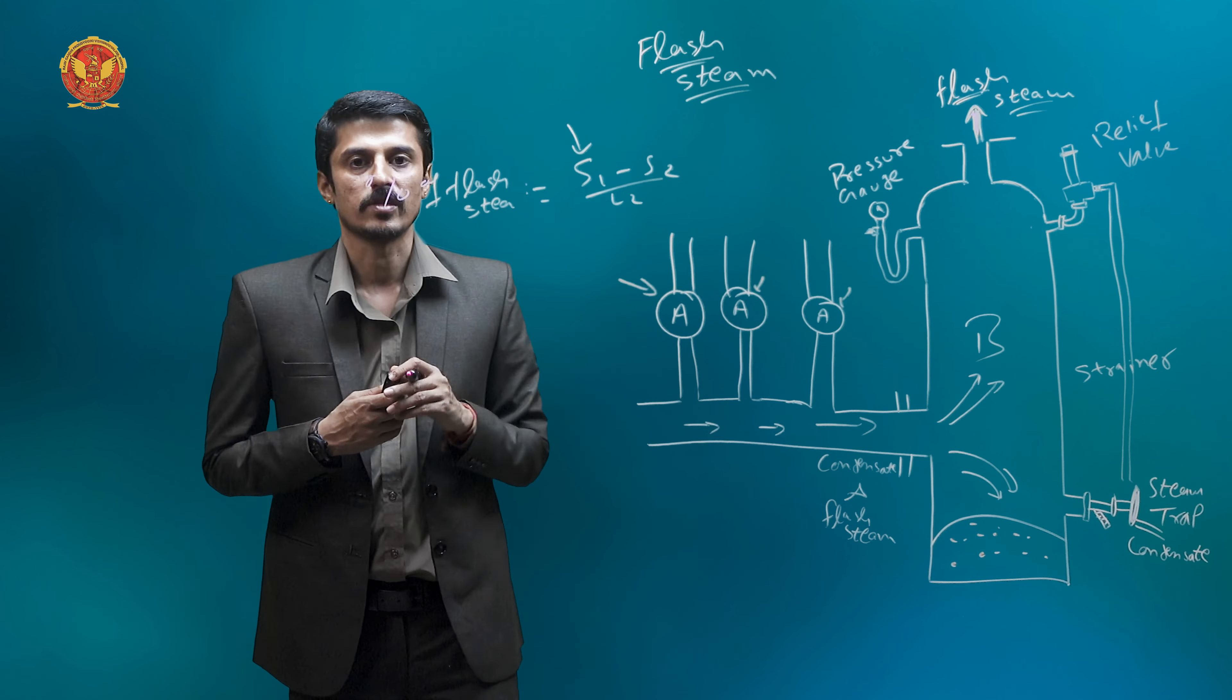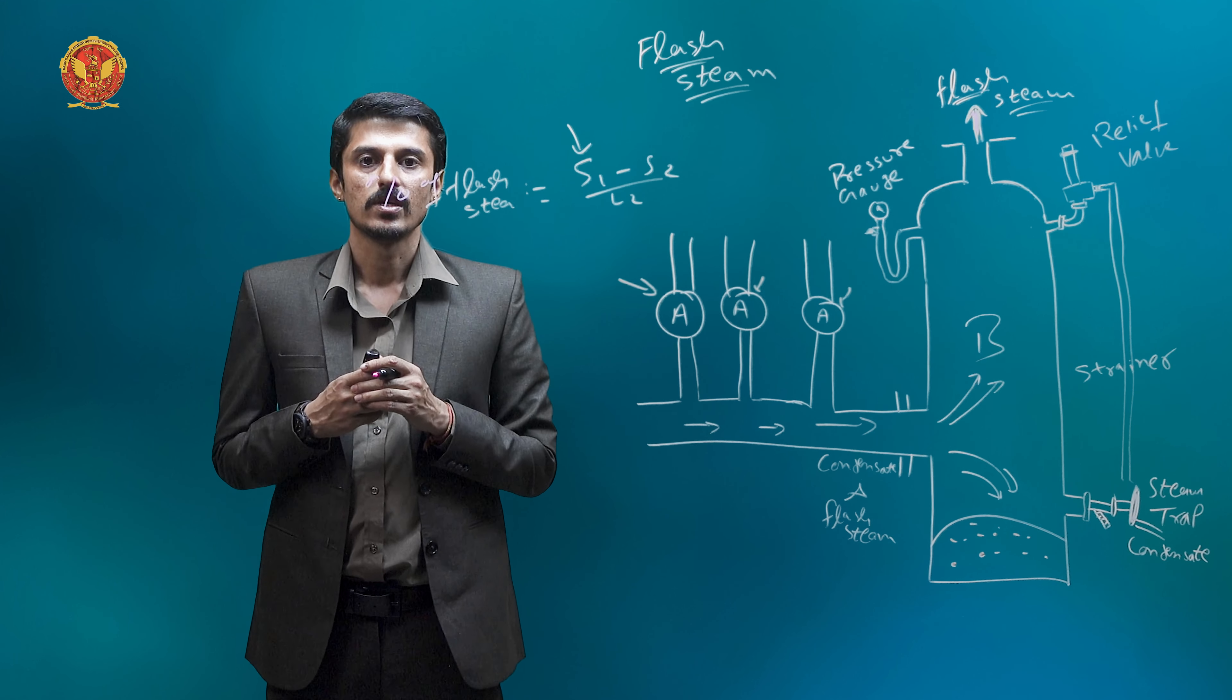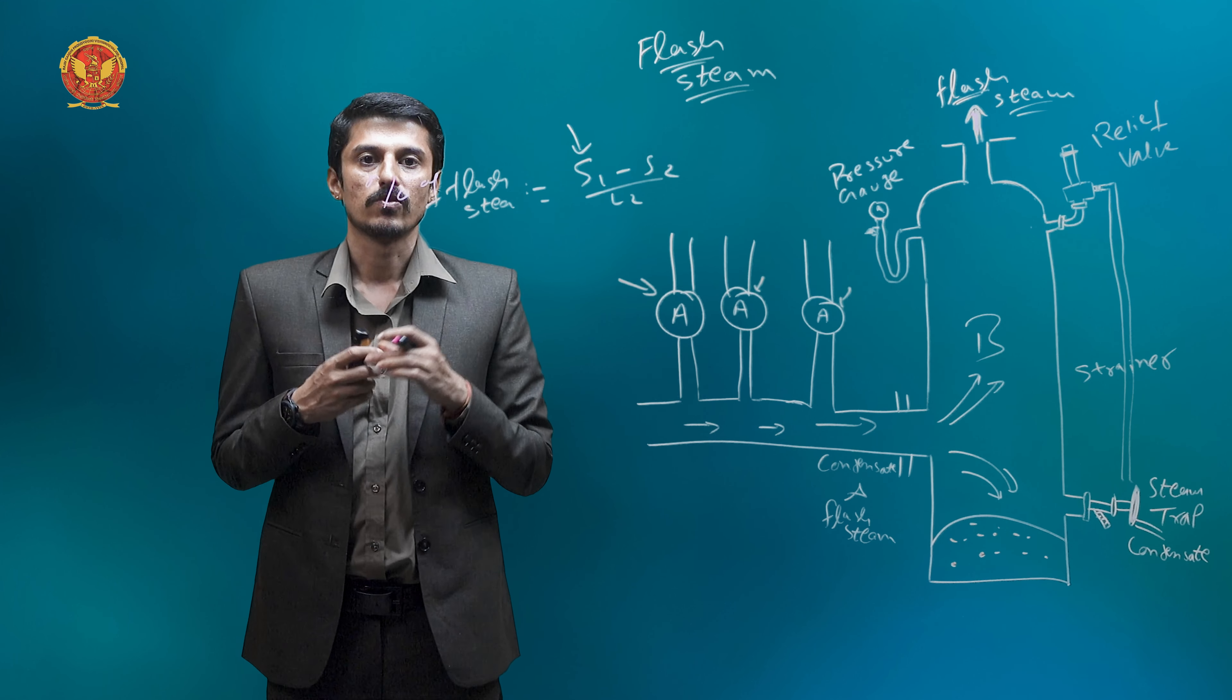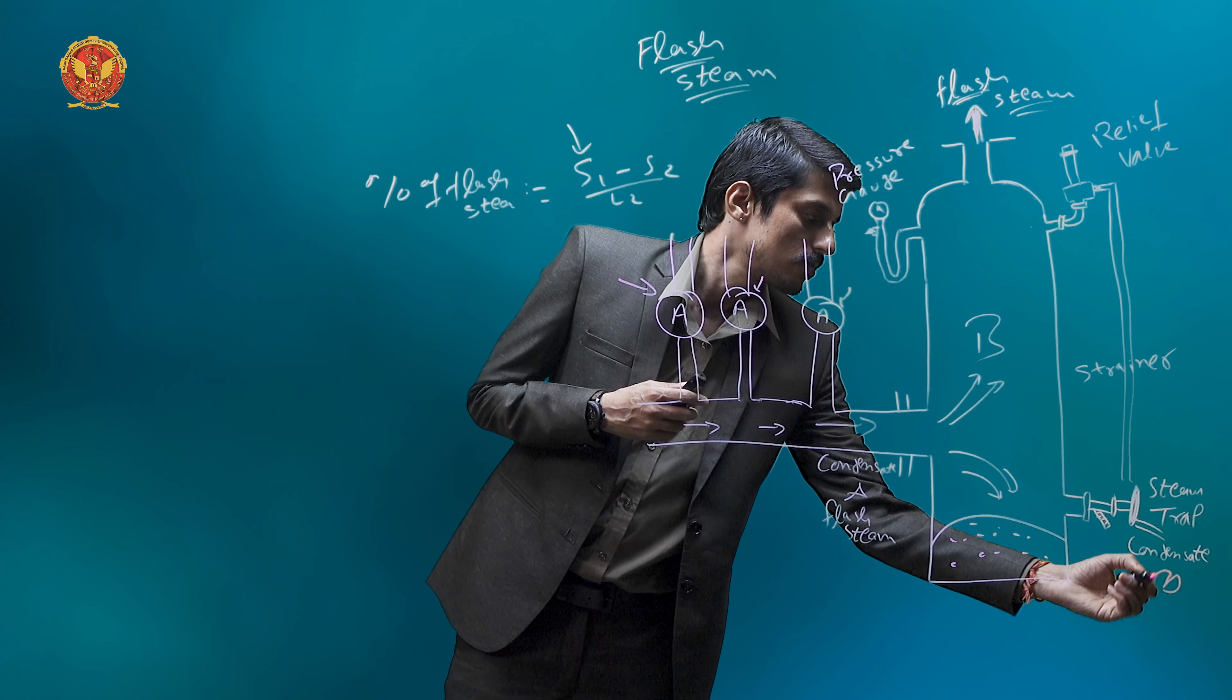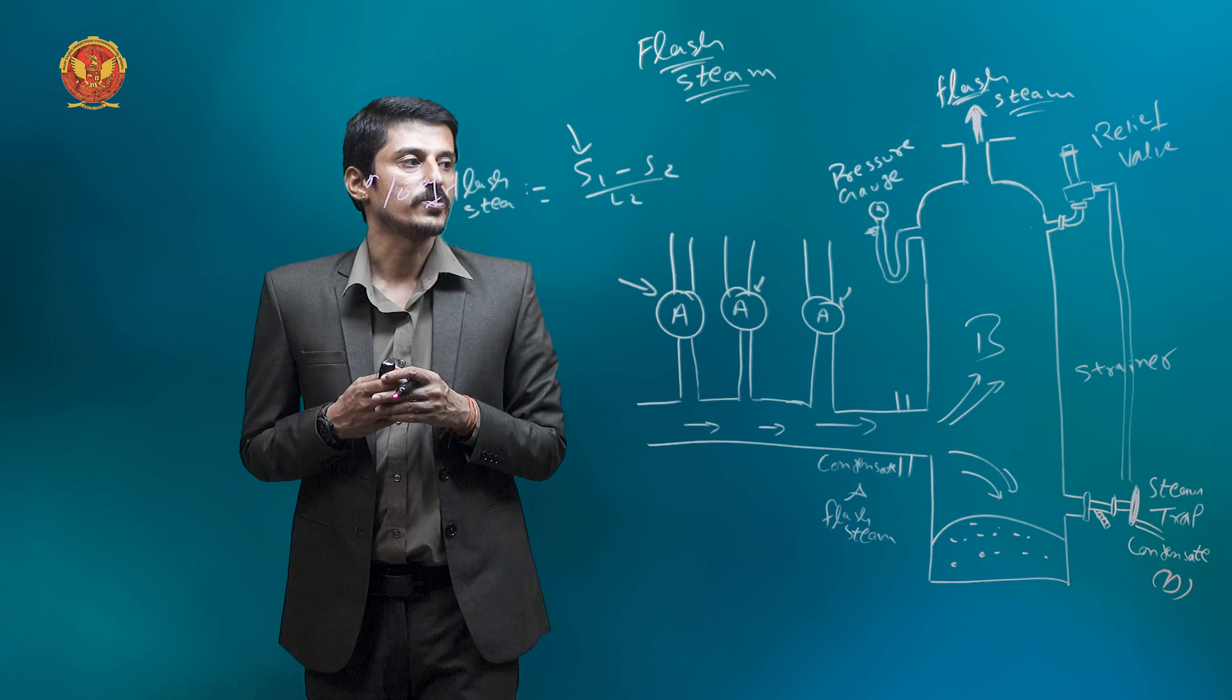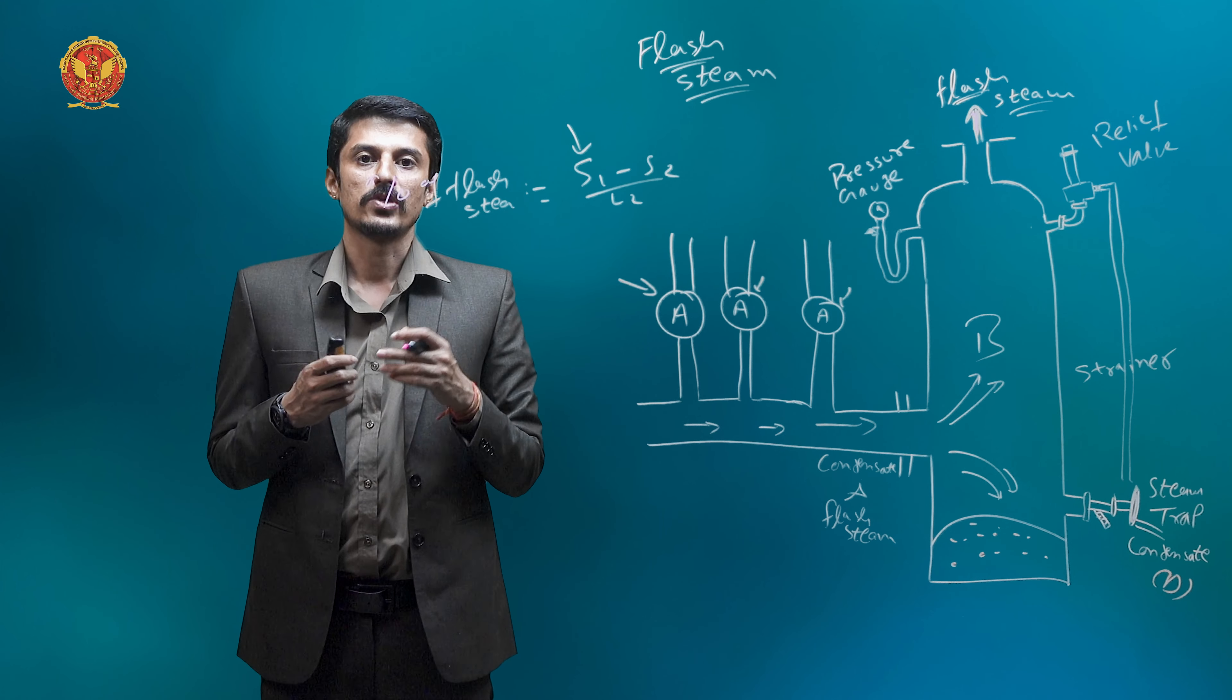The flash steam is let out through C. Now, C is through flash steam to let out. Ultimately, the residual condensate goes out through the steam trap. So D to the residue output can be sent.